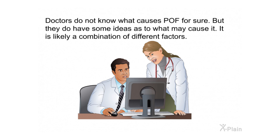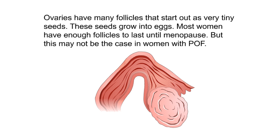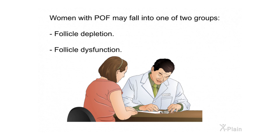Doctors do not know for certain what causes POF, but it is likely a combination of different factors. Ovaries have many follicles that start as very tiny seeds and grow into eggs. Most women have enough follicles to last until menopause, but this may not be the case for women with POF. Women with POF may fall into one of two groups: follicle depletion or follicle dysfunction.